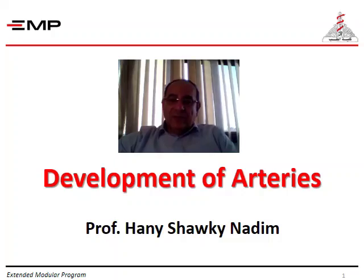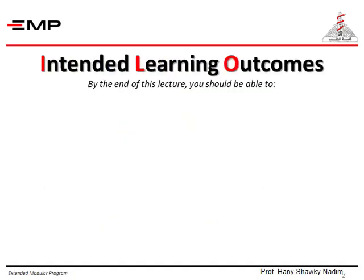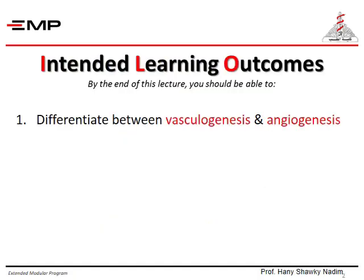Welcome back to this series of embryology lectures. In this lecture we are going to talk about the development of the arterial system of the body. By the end of this lecture you are supposed to be able to differentiate between two processes that lead to the formation of blood vessels. These are called vasculogenesis and angiogenesis.